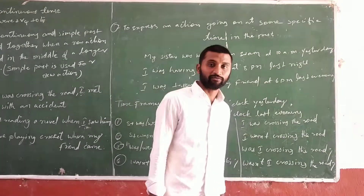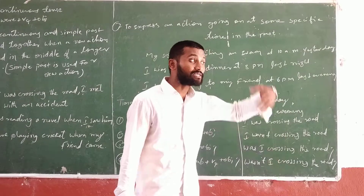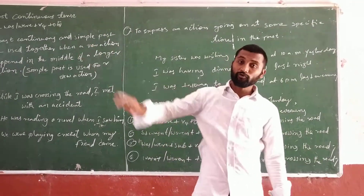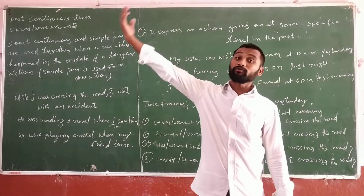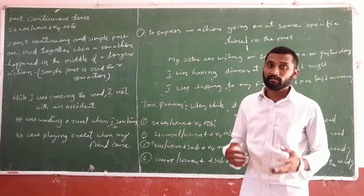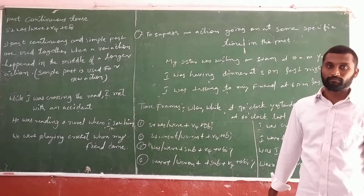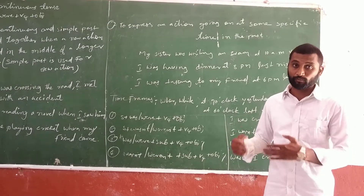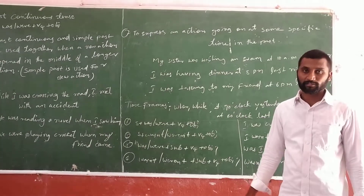Interrogative negative examples: 'Wasn't I crossing the road?' 'Wasn't I sleeping in the class?' 'Wasn't I eating the fruits?' 'Wasn't I going outside?' 'Wasn't I looking outside of the class?' All these are interrogative negative sentences — the possible sentence types in past continuous tense.